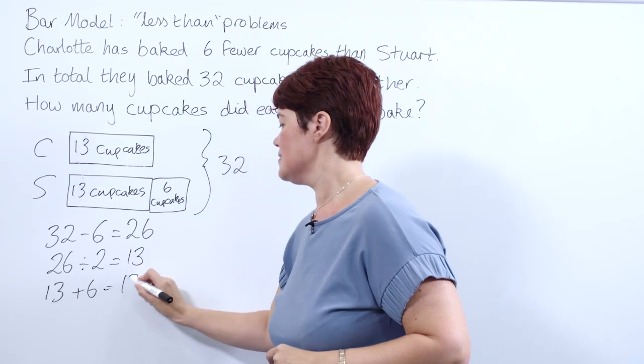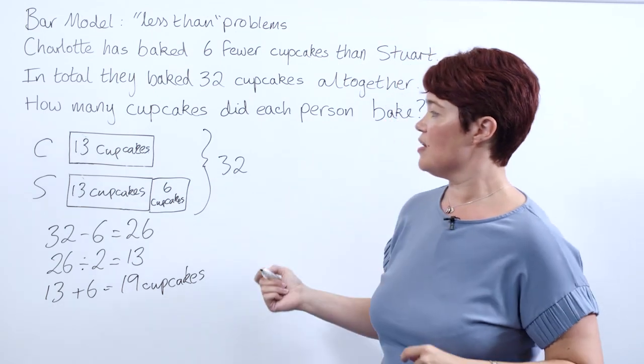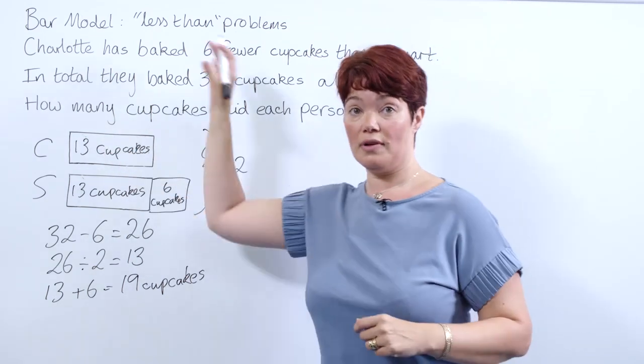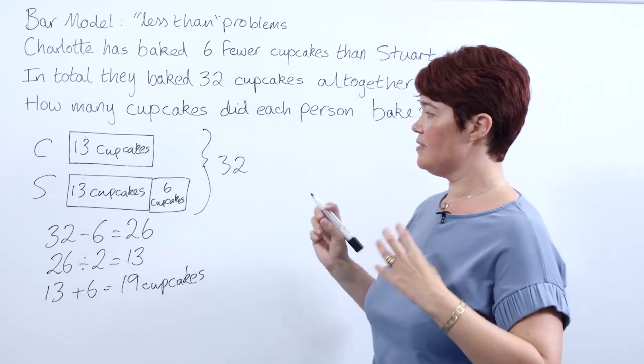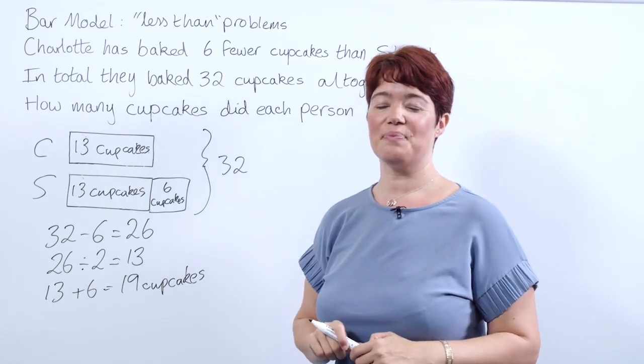So Stuart's baked 19, Charlotte has baked 13. She has six fewer. Looking back at the question, we can add those together to check they make 32, and that's how we use our bar model to solve complex comparison problems.